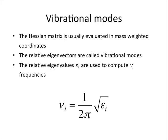Usually, the Hessian matrix is nevertheless evaluated in mass-weighted coordinates. In this case, the eigenvectors are called vibrational modes, and the eigenvalues, indicated as εi, are used directly to compute the νi frequencies with this equation.